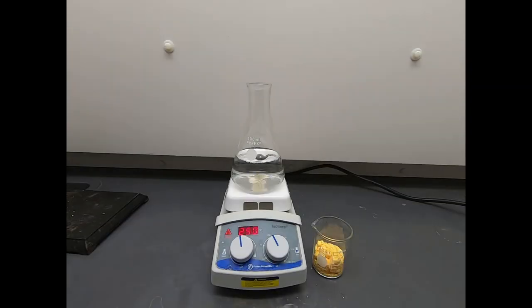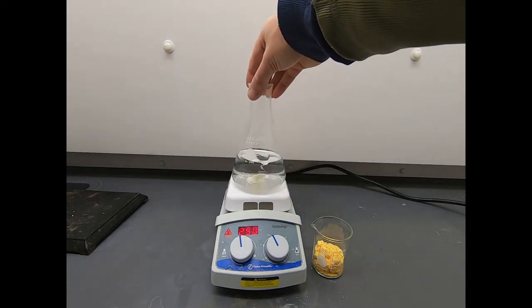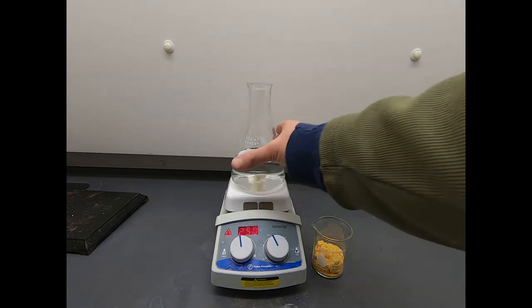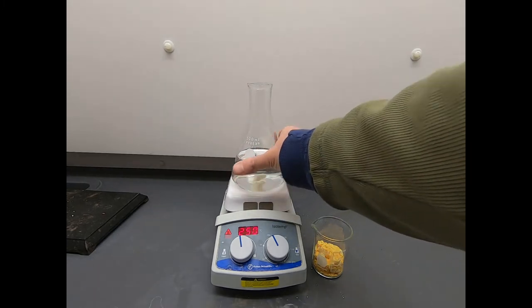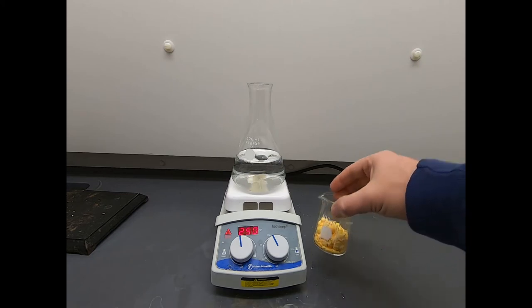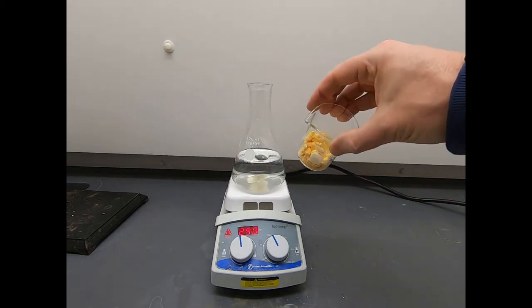Here is our recrystallization getting ready to start. Right here we have 300 milliliters of water. It's just regular distilled water, and we're heating this up to boiling. The hot plate is at 250 degrees, so it should heat up before too terribly long. It's getting uncomfortable to touch, so that's a good sign. And right here, the star of the show, this is our N-bromosuccinimide.